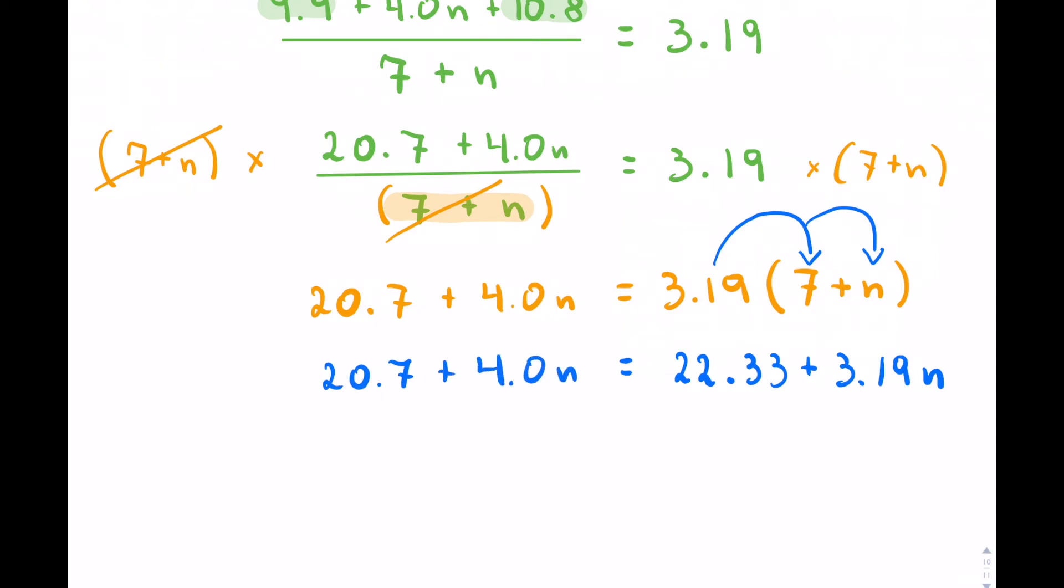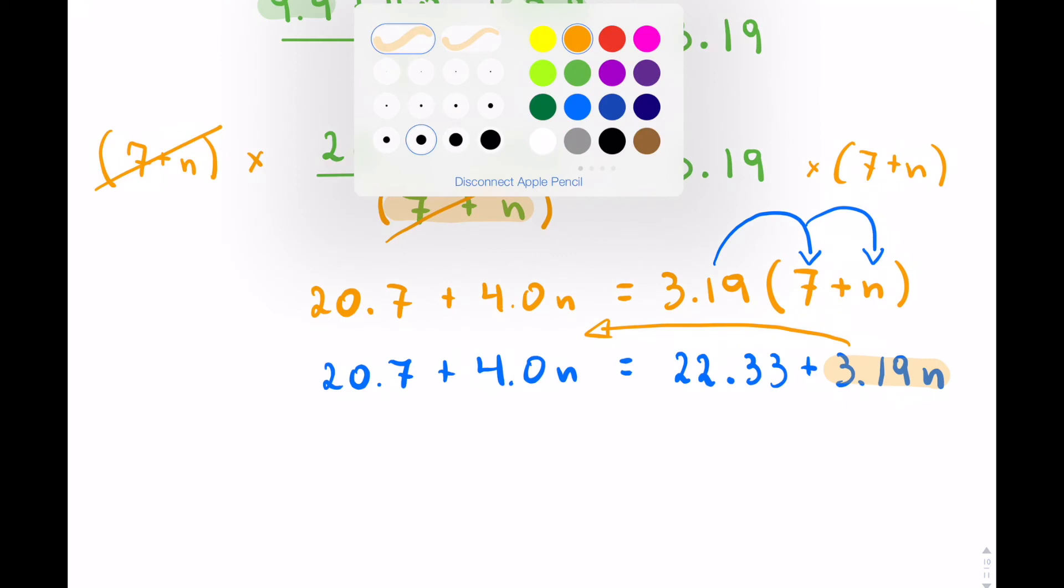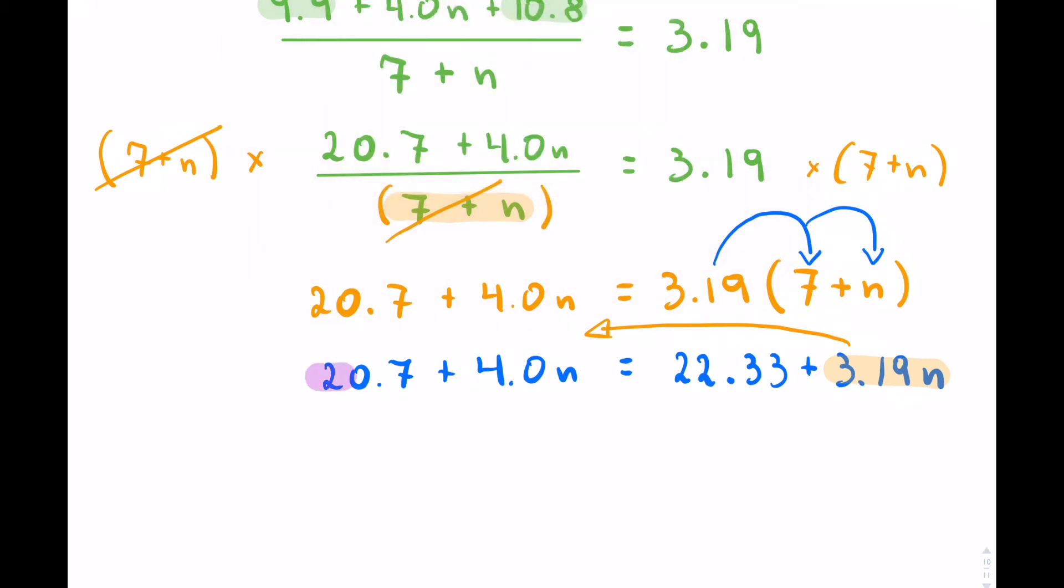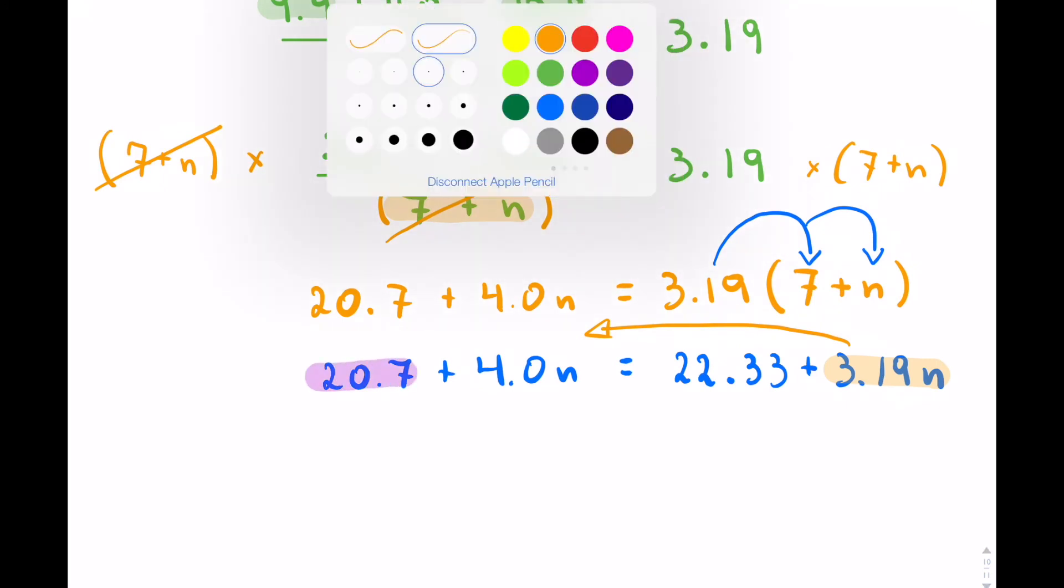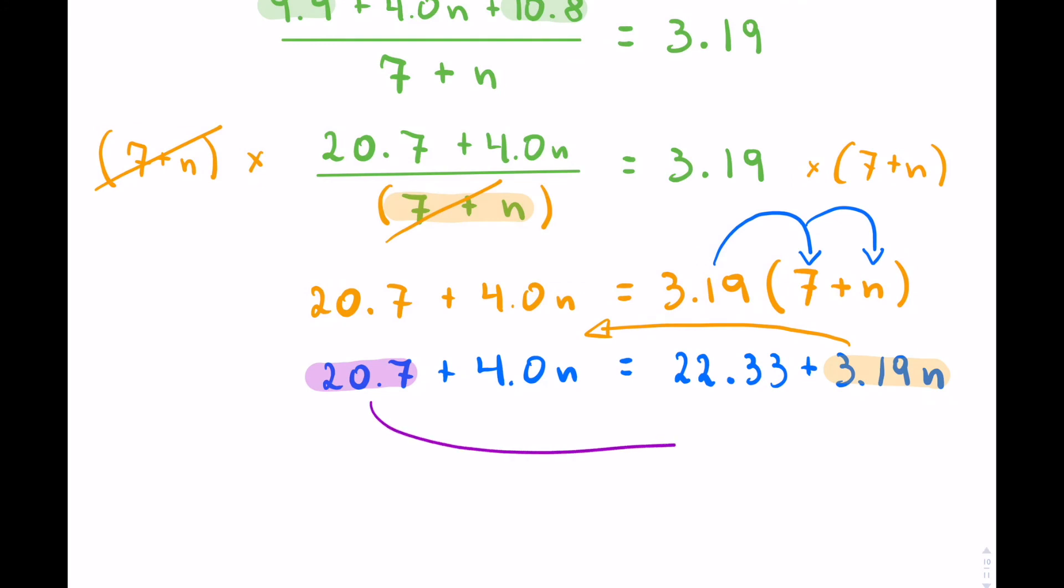Now we're going to rearrange. I'm going to take my 3.19n and shift it over to the left, and then I'm going to take my 20.7 and shift it over to the right.